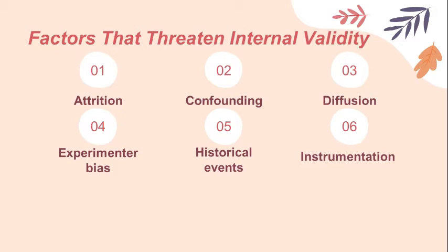The sixth is instrumentation. It is possible to prime participants in a study in certain ways with the measures that researchers use, in which changes in calibration of measuring instruments or changes in the observers or scorers used may produce changes in the obtained measurements.